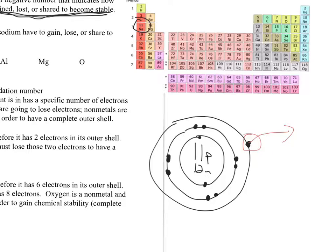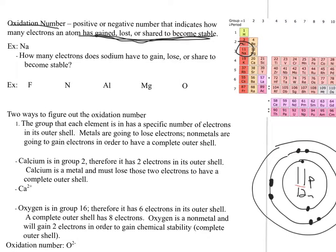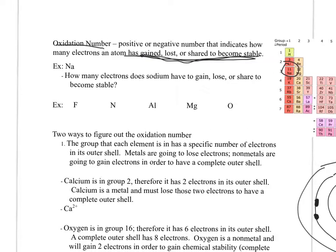Because sodium has one in its outer shell, it will easily lose that one electron. The sodium atom will then become positively charged — it lost an electron, meaning it lost a negative charge. Now it has 11 protons (11 positives) and only 10 electrons (10 negatives). So sodium's oxidation number is a simple positive one (+1).